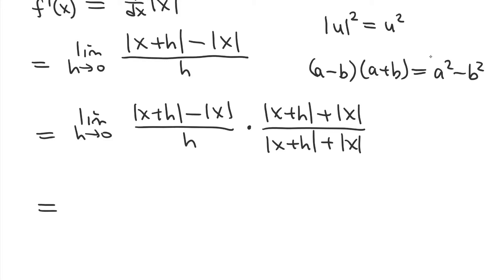And then, in the numerator, we get this times this, which is the difference of squares, which is equal to the first thing squared, which means absolute value x plus h is all squared, minus the second thing squared. And that's divided by the denominator, which we just multiply through. And, of course, limit h goes to 0.